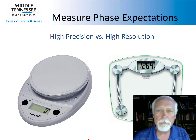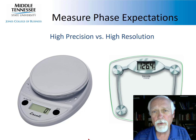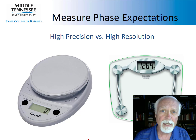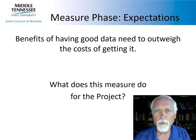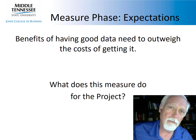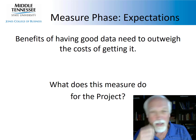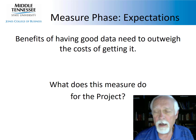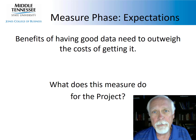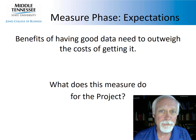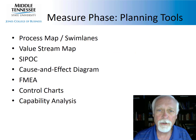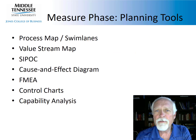This is Kimball Bullington continuing the measurement phase overviews — part two. We talked about accuracy and precision, and precision versus resolution. Whatever we develop as a measurement system, the benefits of getting the data need to outweigh the cost of getting it. If we can't answer what this measure does for the project, then we probably shouldn't include it.